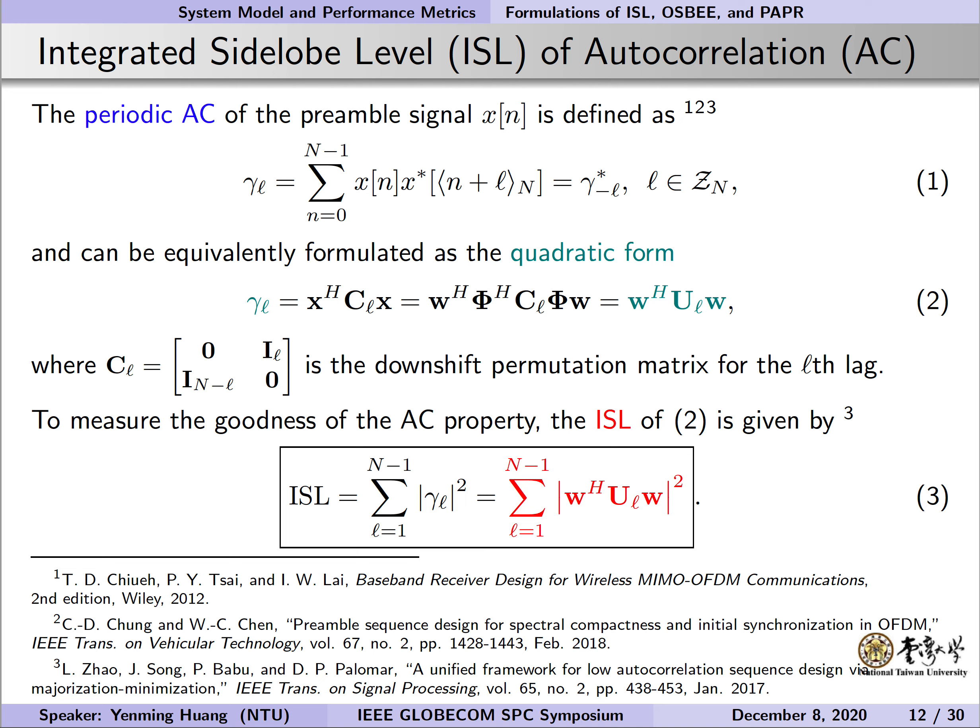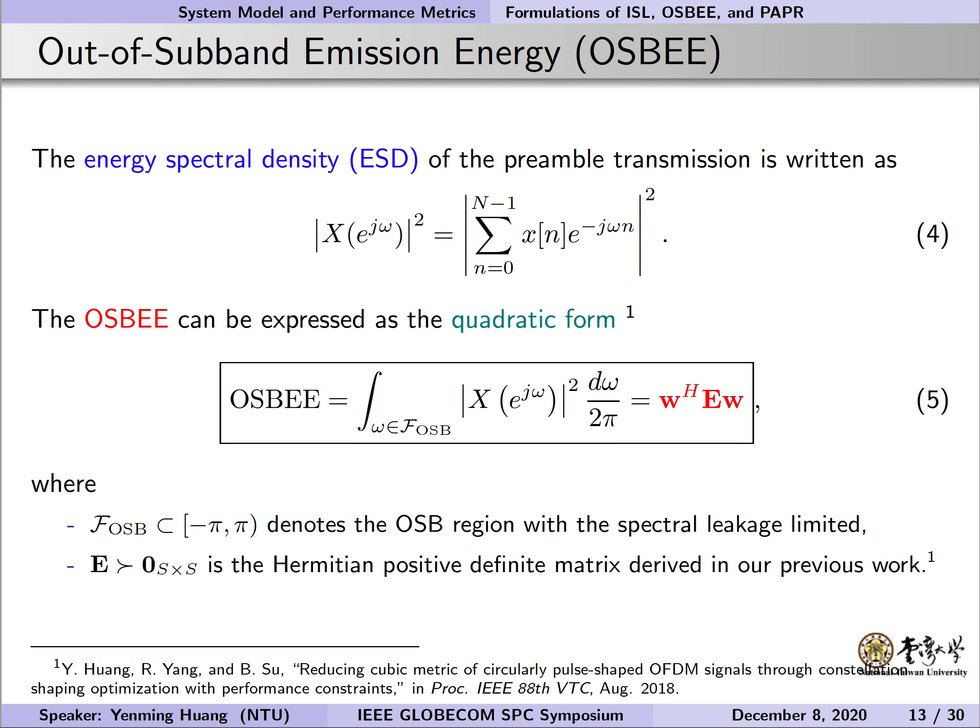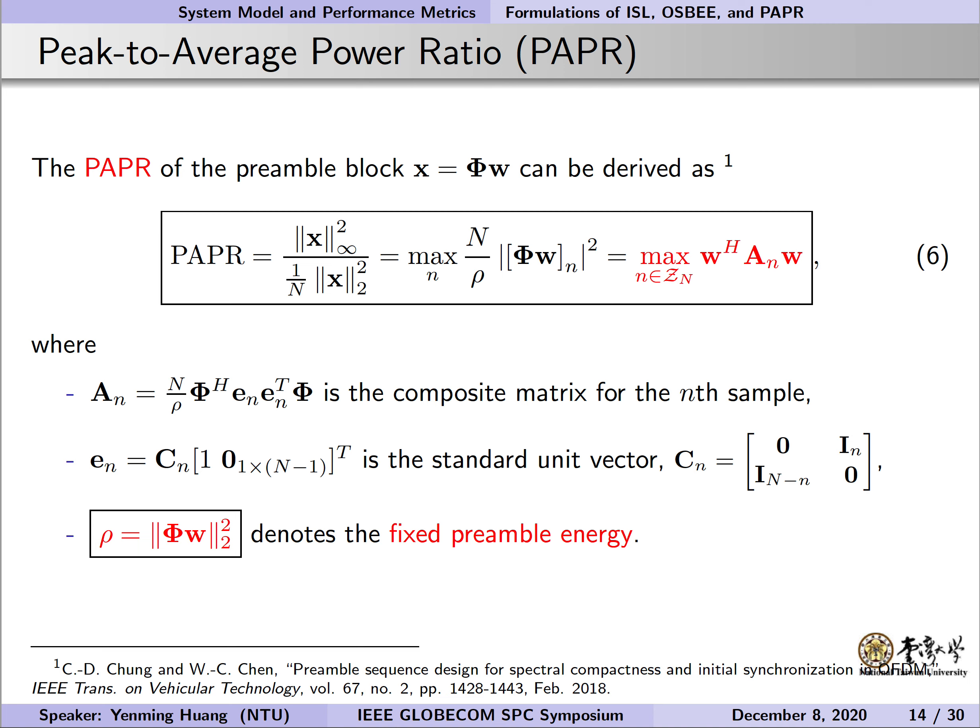Next, we will provide three mathematical formulations for ISL, OSBE, and PAPR. First, the periodic autocorrelation of the preamble signal is defined as equation 1, and can be equivalently expressed as a quadratic form as shown in equation 2. To measure the goodness of the autocorrelation property, the ISL is given by equation 3. To obtain the OSBE, we need to know the energy spectral density of the preamble transmission in advance; then the OSBE can be expressed as the quadratic form shown in equation 5. Recall that the preamble vector X equals the matrix-vector product of the CPS-OFDM modulation matrix Phi and the pilot vector W. The PAPR can be derived as equation 6, which finds the maximum power among the N preamble samples. We use rho to denote the fixed preamble energy.